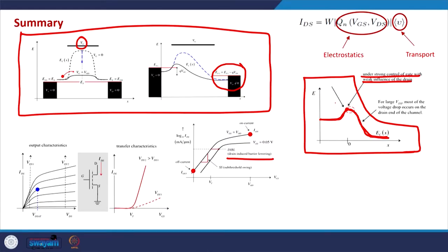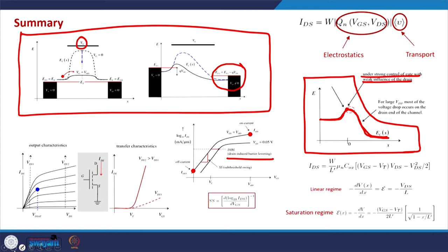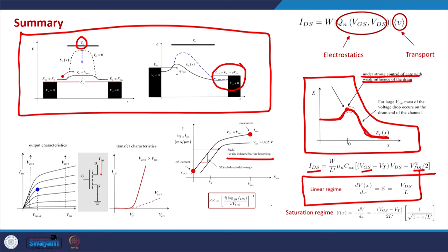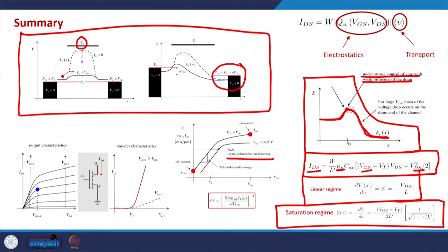We have seen the sub-threshold swing and how we traditionally define the IV characteristics of the MOSFET in terms of IDS, VDS, and VGS, and how we calculate the electric field in a traditional MOSFET from the current expression. But this equation is generally not valid if we go to nano MOSFETs or ballistic MOSFETs, because in that case the notion of mobility is not defined and we need to consider ballistic transport. We need to invoke the general model of transport to properly understand the MOSFET physics.